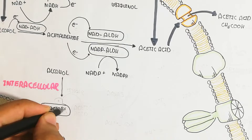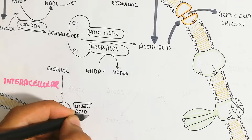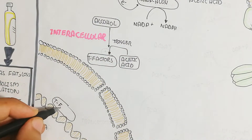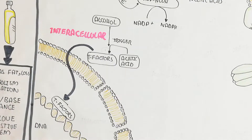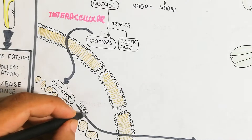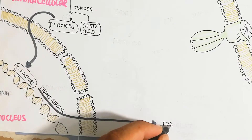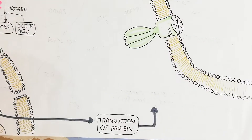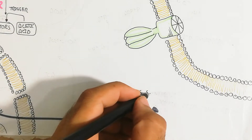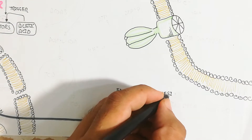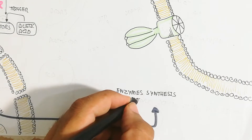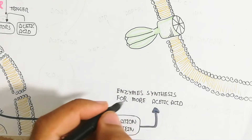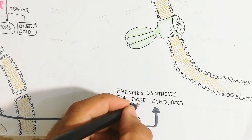Alcohol and acetic acid both act as signals that trigger transcription factors. After phosphorylation, these transcription factors bind DNA, initiating transcription and translation to synthesize more enzymes — such as PQQADH, PQQALDH, and MCDALDH — for continued acetic acid conversion.